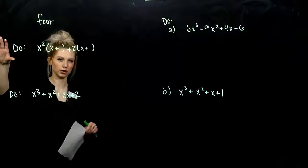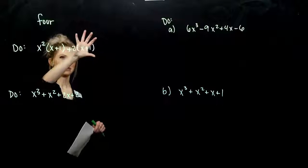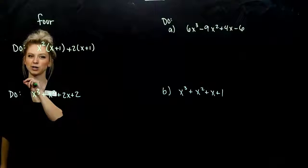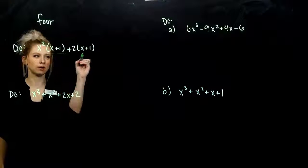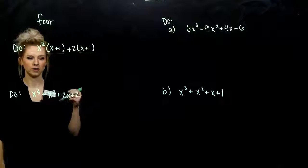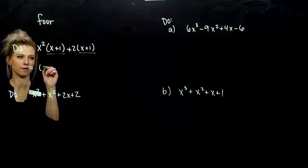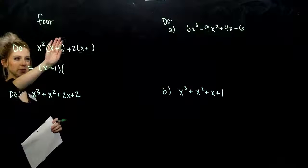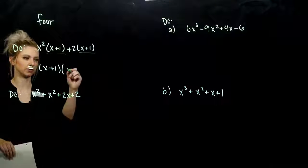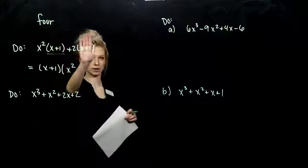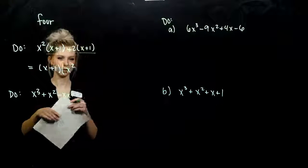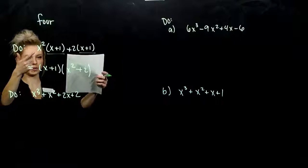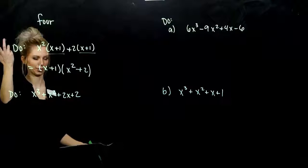Behaving as we had before, I've got my first term and my second term. Do they share anything in common that we can take out of both? They have to match exactly. I've got x plus one and x plus one that they both share in common. So if I take that factor out of both, on my first term I've got x squared left over, and from the second term I've got two left over. It's factored like this — basically factoring by grouping, but we're starting from the third step.